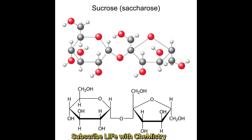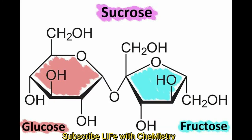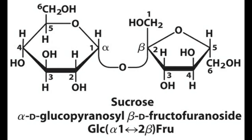Thus, invert sugar gives a specific rotation of −28.2 degrees. Basically, sucrose in the presence of water gives α-D-glucopyranose plus β-D-fructofuranose, and the final product is β-D-fructopyranose. The structure of sucrose is α-D-glucopyranose linked 1→2 to β-D-fructofuranose. Today we discussed the properties and structure of sucrose. Thank you.